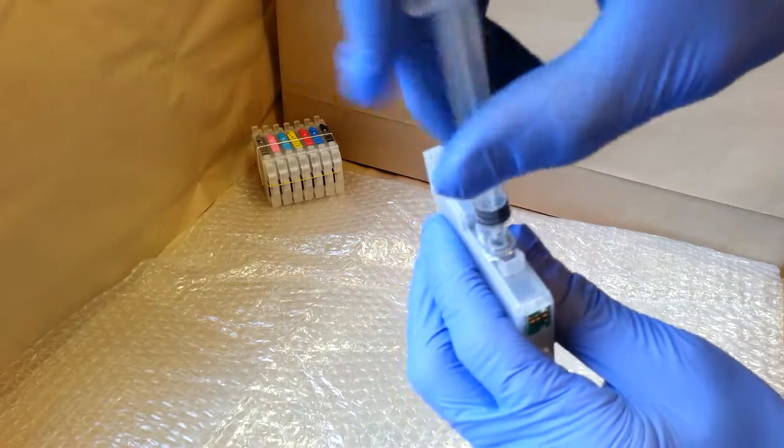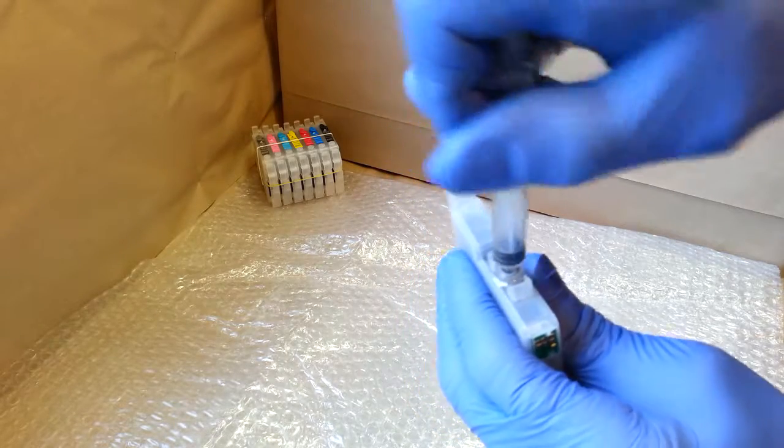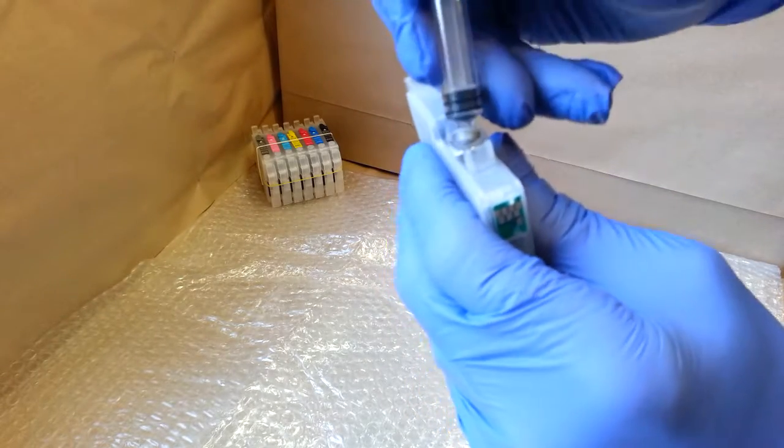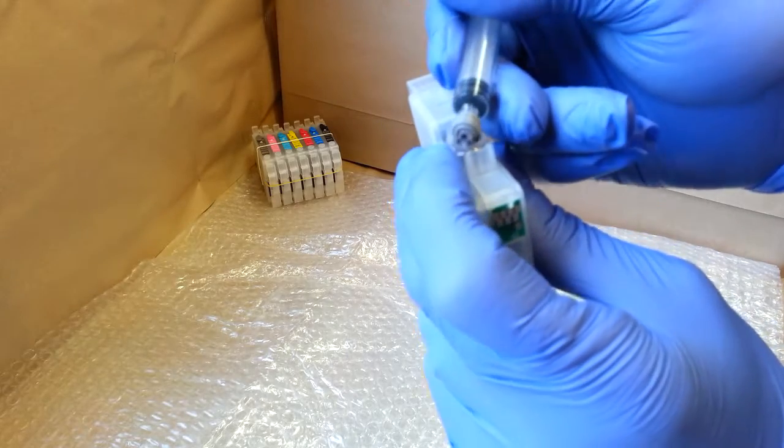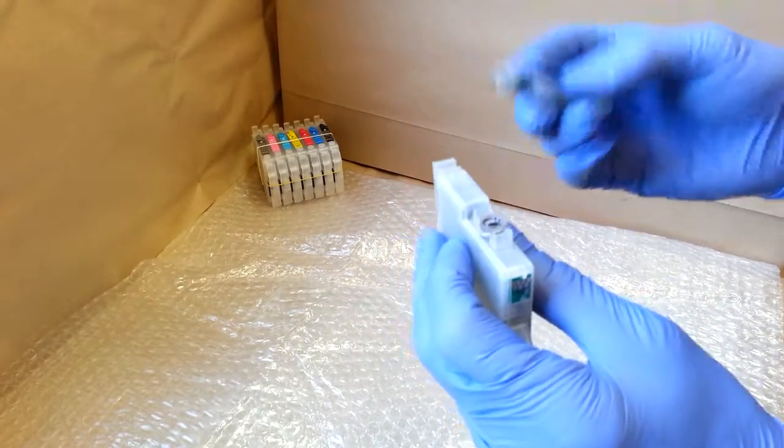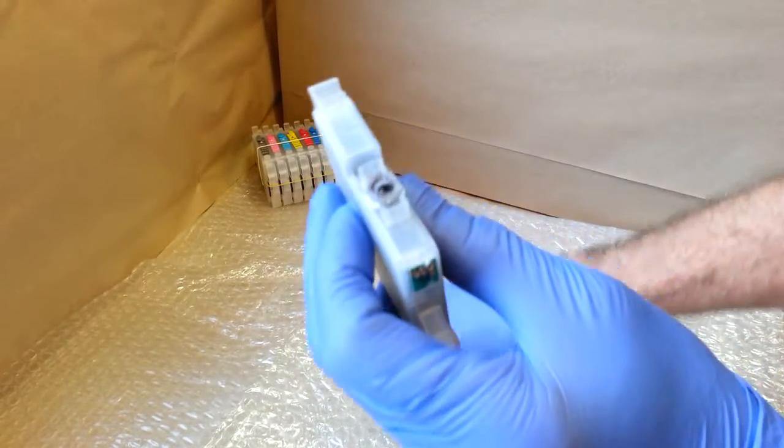So what I'm going to do is simply force the syringe tip into the cartridge like that, pry it slightly over, and it just pops right out. I've just taken that little rubber septum off.